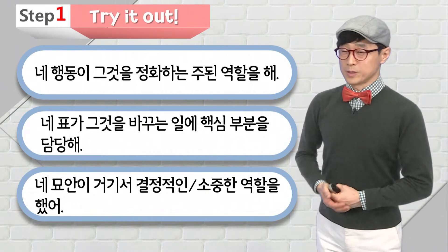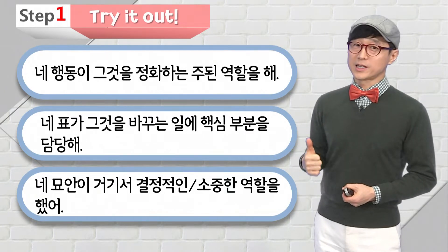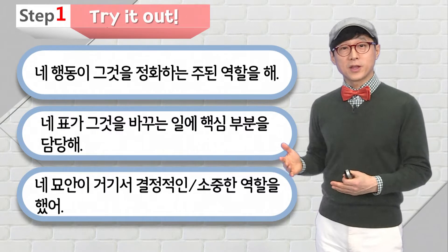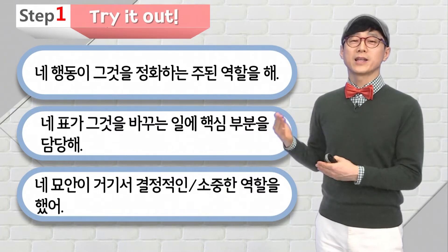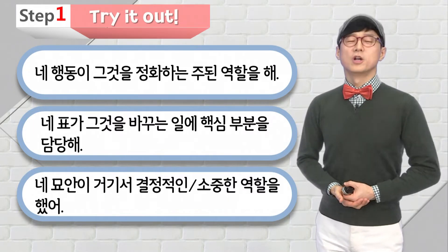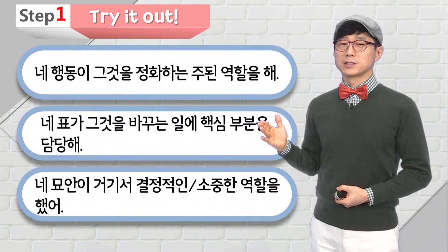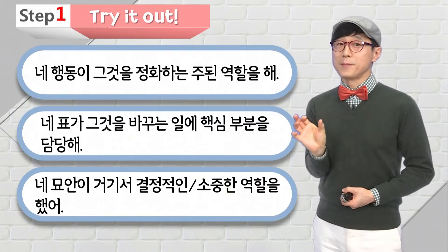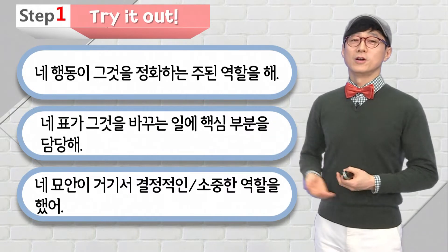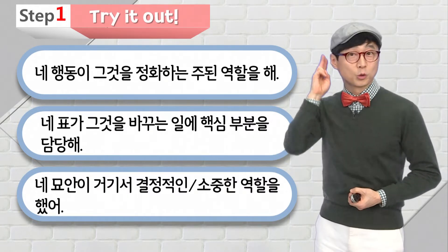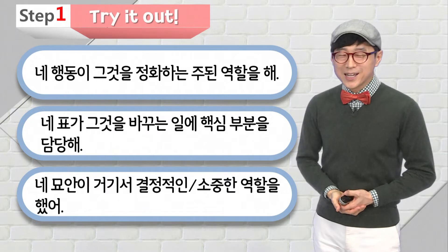Try it out Step 1 보세요. 너의 행동이 그것을 정화하는 데 주된 역할을 한다니까, 야 깨끗하게 만드는데 네 행동이 필요해, 그게 제일 중요한 거야, 이런 뜻이잖아요. 그러면 당신의 행동 your action이라고 하시면 되겠죠? your action. 그 다음에 plays a role. 이때 주된 역할을 한다고 했으니까 major role처럼 major, m-a-j-o-r. 우리 major league 할 때 그 major예요. 정화하다는 쉬운 단어 cleaning it을 쓰시면 되겠어요.